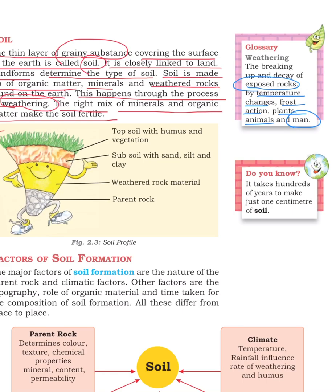The soil definition: soil is the unconsolidated mineral or organic material on the surface of the earth that serves as a natural medium for the growth of plants. So most of the surface of the earth is soil.